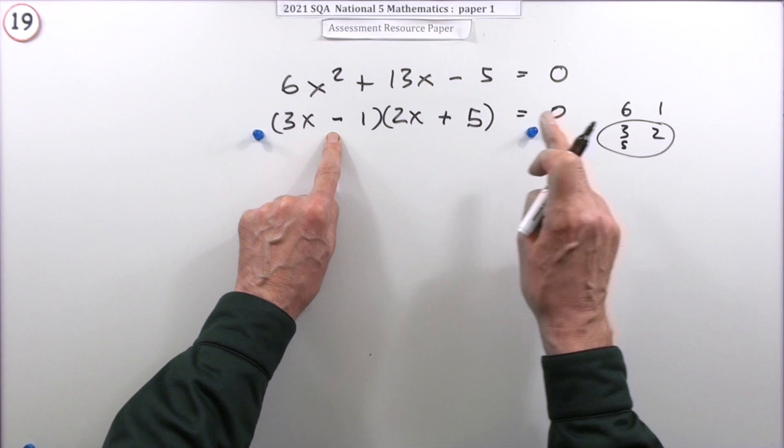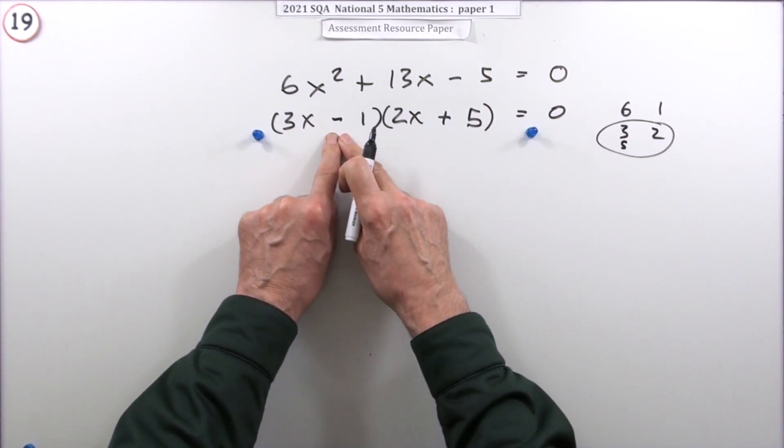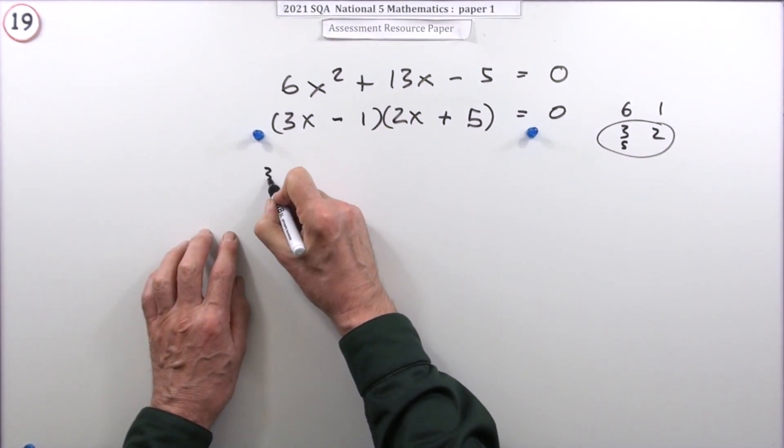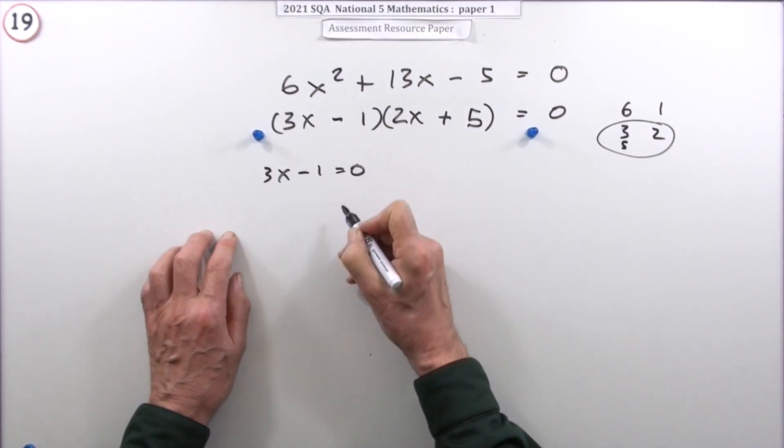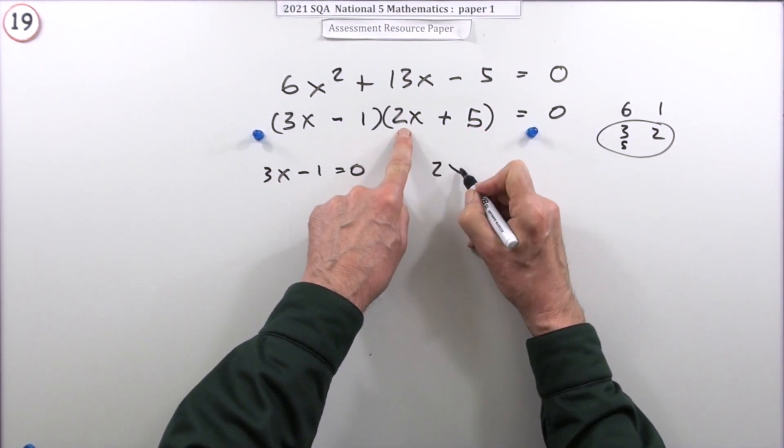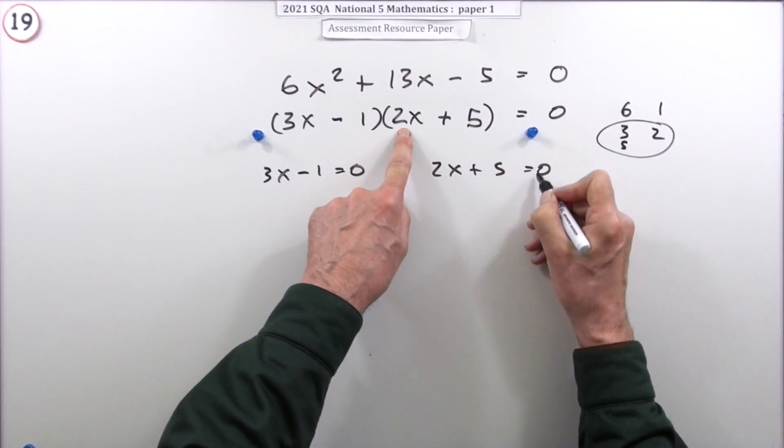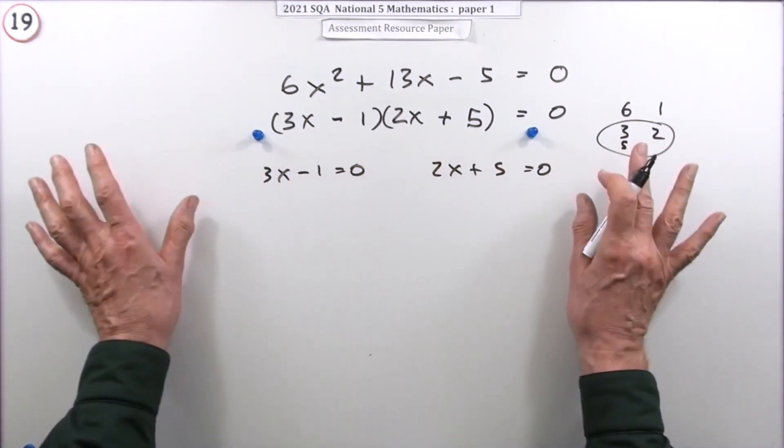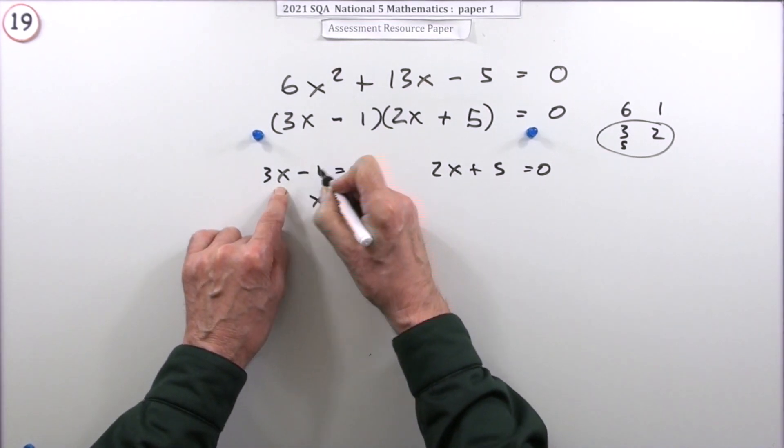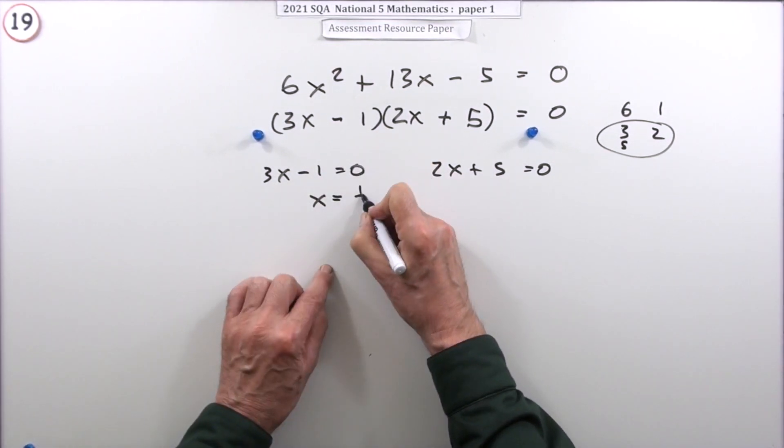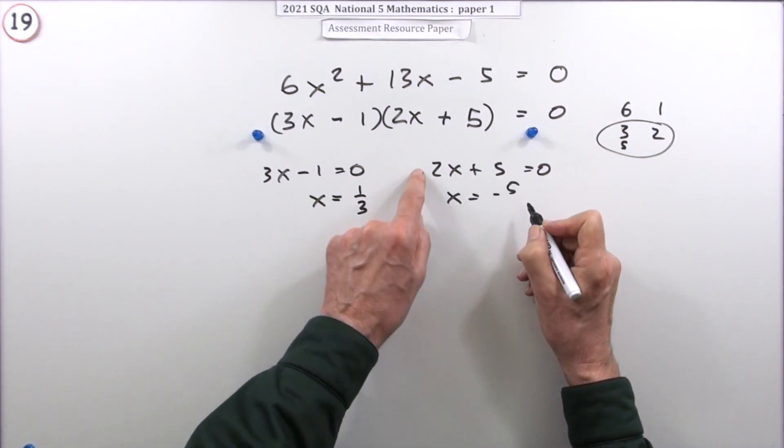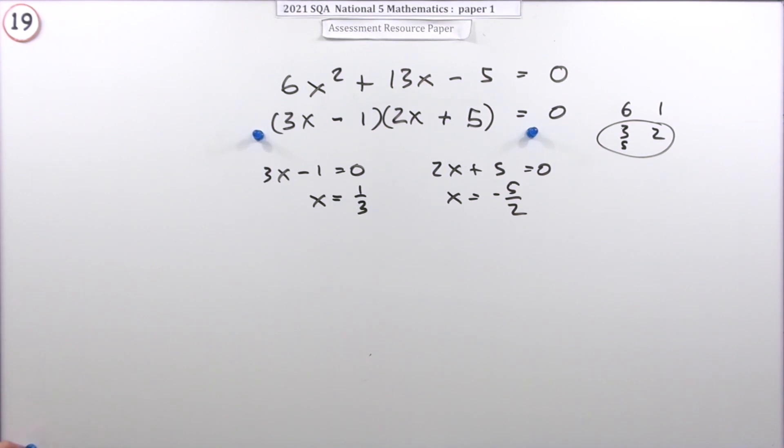Now solve it. If two numbers multiply to give zero, then one of them must be zero. Either 3x minus 1 is zero, or 2x plus 5 is zero. From that you can get to the answer. Take the 1 across and divide by 3, so that's a third. Take the 5 across, negative 5, divide by 2, so negative five upon two. There's the two answers.